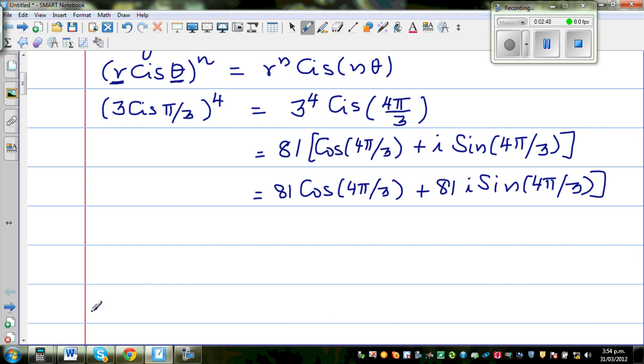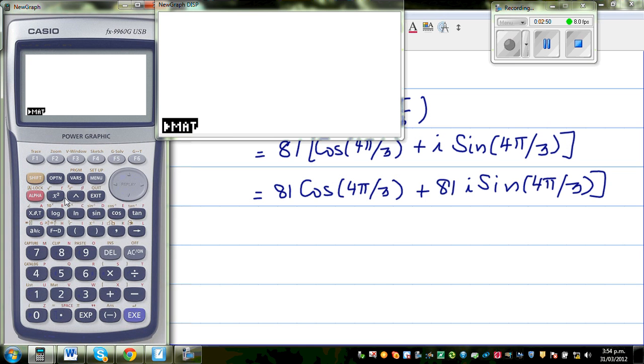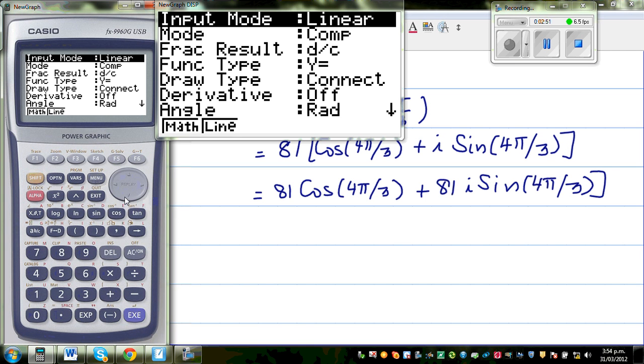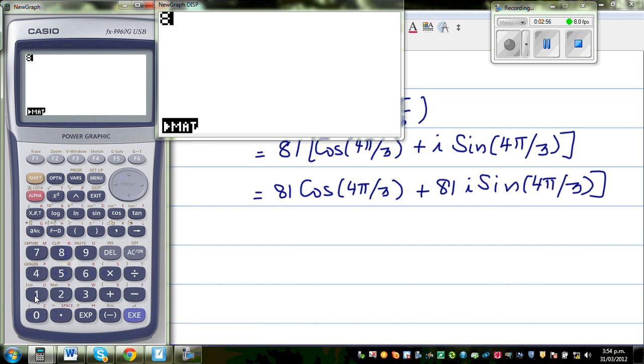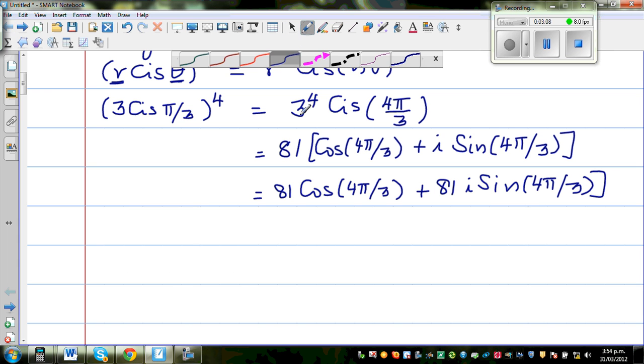So let's use a calculator. My calculator is set in radians, so always check your settings. Just type in 81 cos bracket 4 shift π by 3, which is minus 40.5. So this part is minus 40.5.